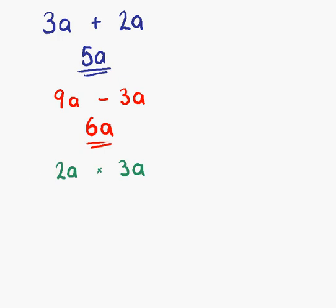Example number 5. We have 2a times 3a. So first of all, 2 times 3 is 6. And a times a is a squared.